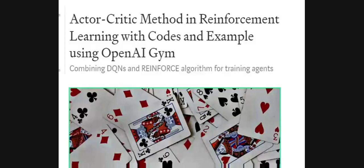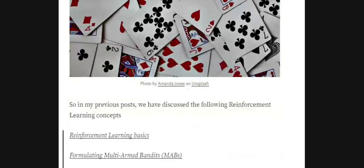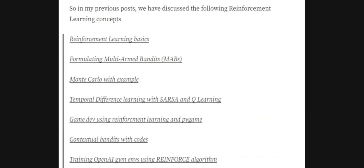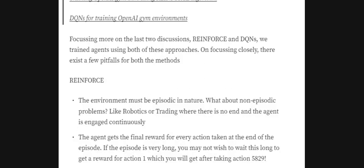Hi everyone, today we will be discussing a very important methodology in reinforcement learning called the Actor-Critic method. In my previous videos I covered many things on reinforcement learning like RL basics, MABs, contextual bandits, Monte Carlo, how to train OpenAI agents using the REINFORCE algorithm, and DQNs. Taking a step further, we will be discussing the Actor-Critic method — specifically the Advantage Actor-Critic, called the A2C algorithm.